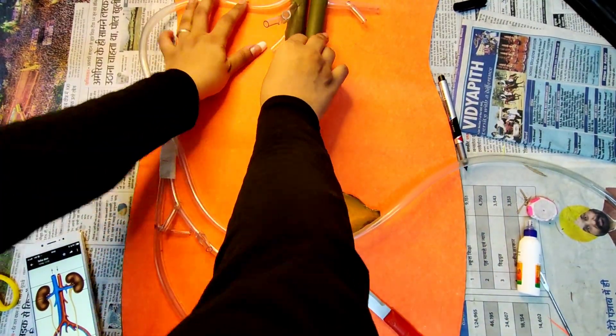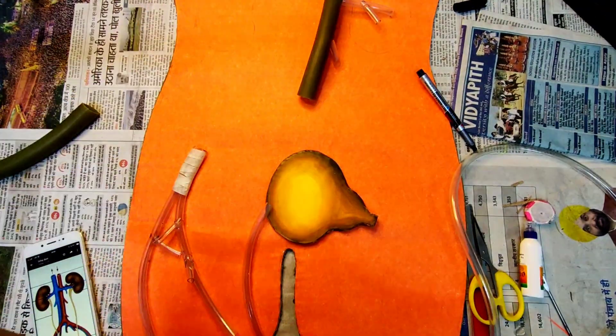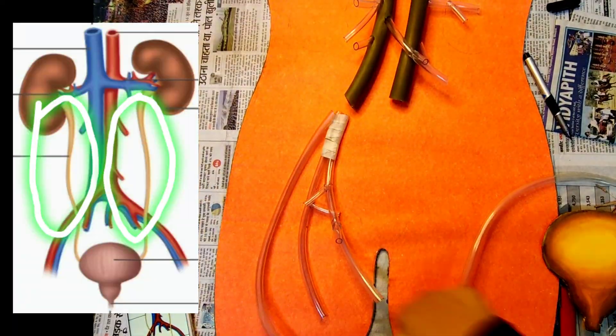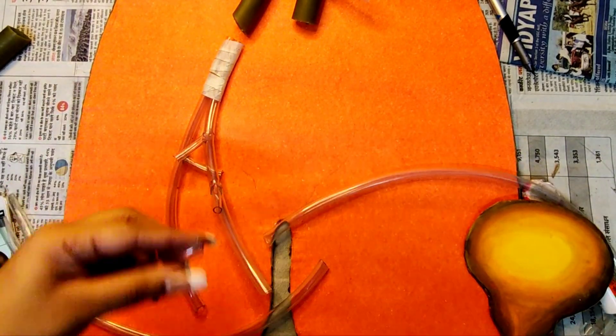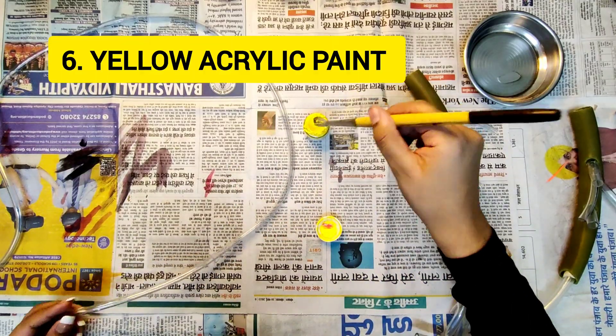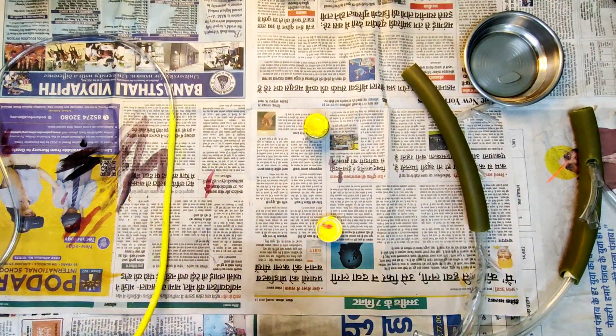After completion of the arteries and veins, let's make the ureter of the excretory system. There are two ureters. For that we need to take a long transparent pipe, cut it in two parts, and start painting it with yellow or any kind of vibrant color. Here I'm using acrylic yellow color. You can even use watercolor if you don't have acrylic.